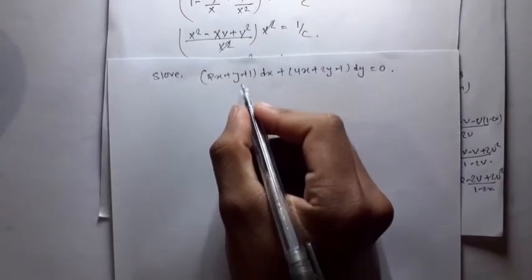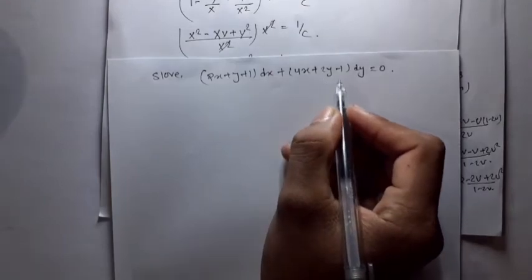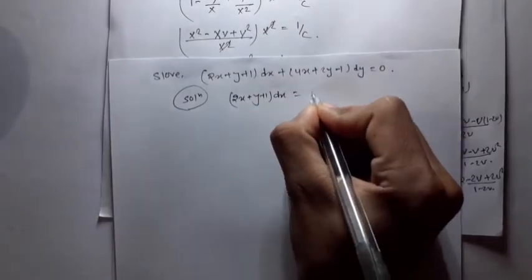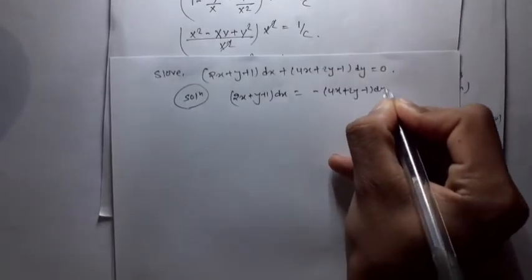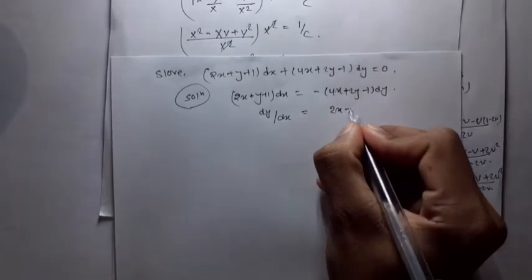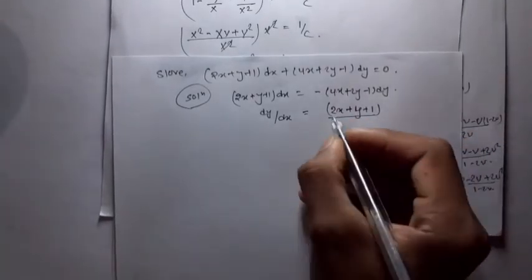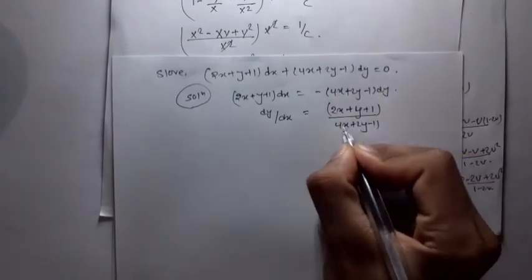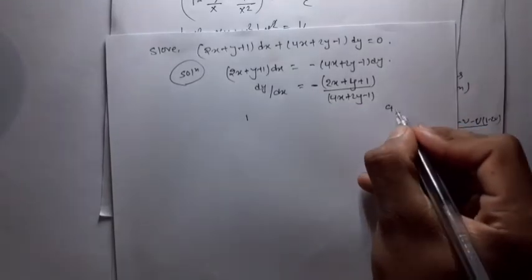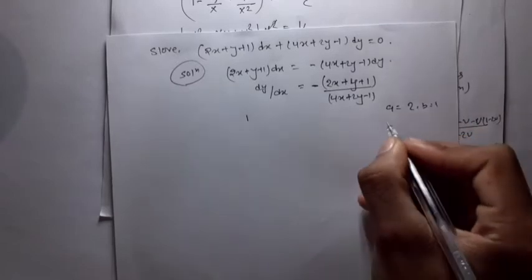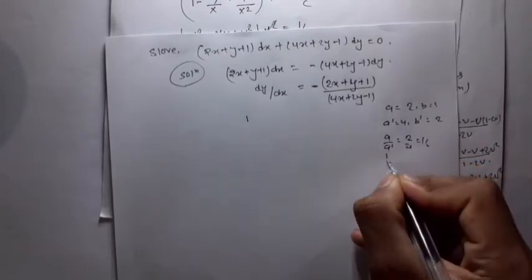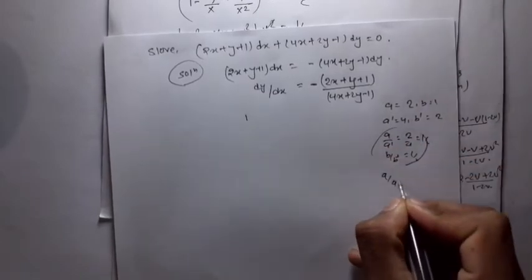Next question: (2x + y + 1)dx + (4x + 2y - 1)dy = 0. Rearranging: dy/dx = -(2x + y + 1)/(4x + 2y - 1). Here a = 2, b = 1, a' = 4, b' = 2. So a/a' = 2/4 = 1/2 and b/b' = 1/2. Since a/a' = b/b', this is Case 2.